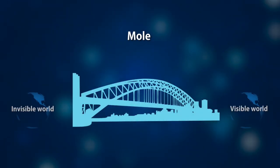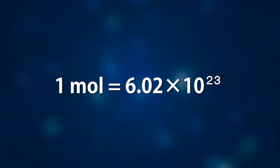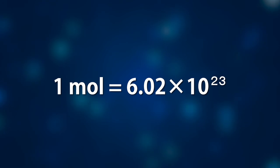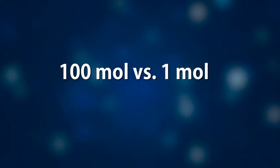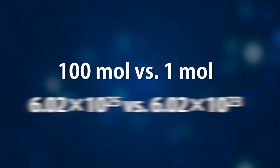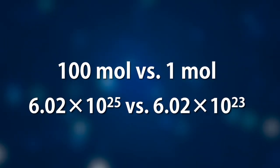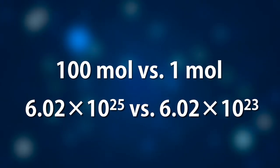By grouping 6.02 times 10 to the 23rd particles together, mole is like a magic bridge between the invisible world and the visible world we see around us. One water molecule is invisible to our eyes, but one mole of water can be seen and measured. If we use moles to replace the large number of molecules, which is 6.02 times 10 to the 23rd, it's much easier to figure out the scale of amounts — for example, the difference between 100 moles and 1 mole of particles rather than comparing those enormous numbers directly.